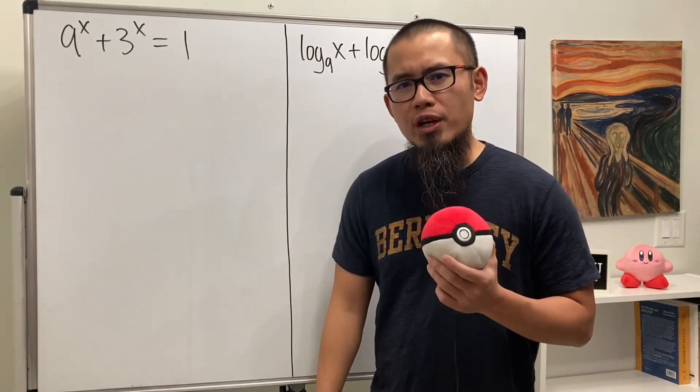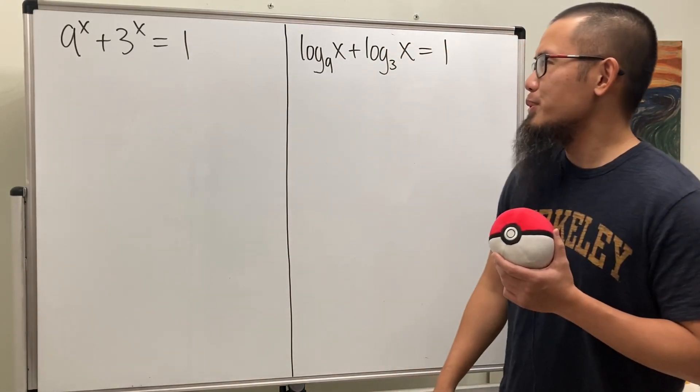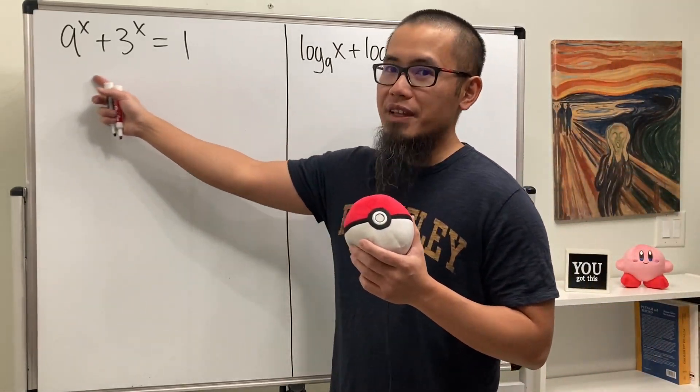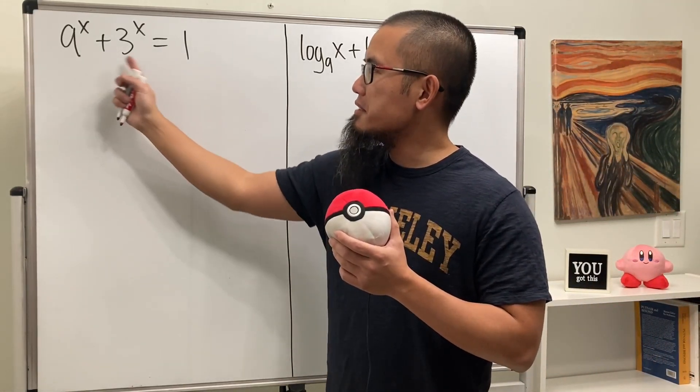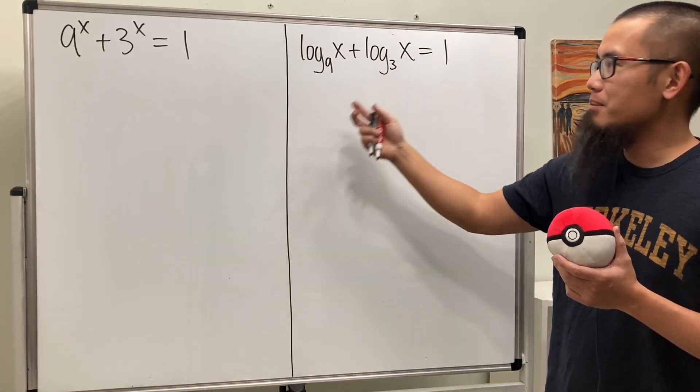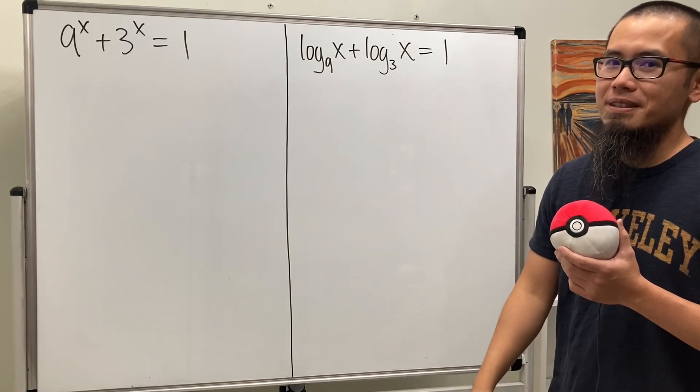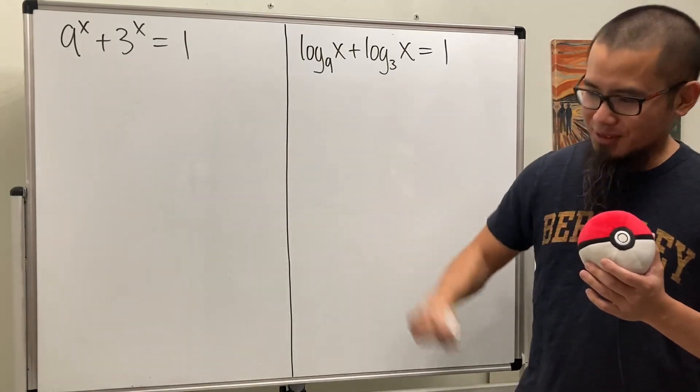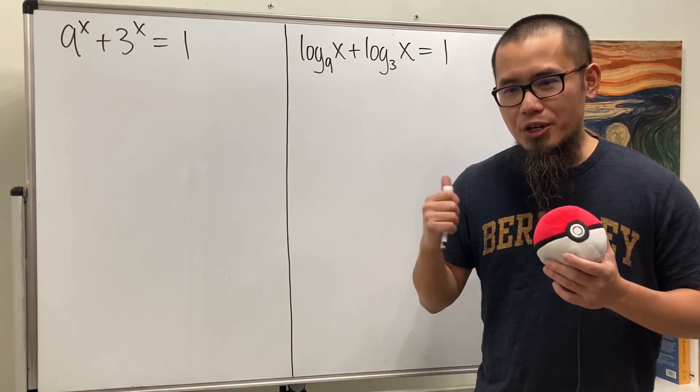I came up with these two equations from a precalculus class and I think they are really cool. For the first one we have an exponential equation but the bases are different, and for the second one we have a similar flavor but with logarithms instead. How can we approach them? As always, please pause the video and try them first.